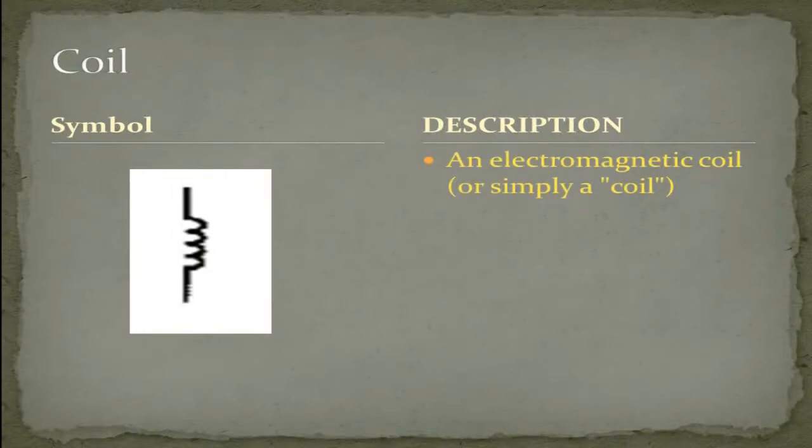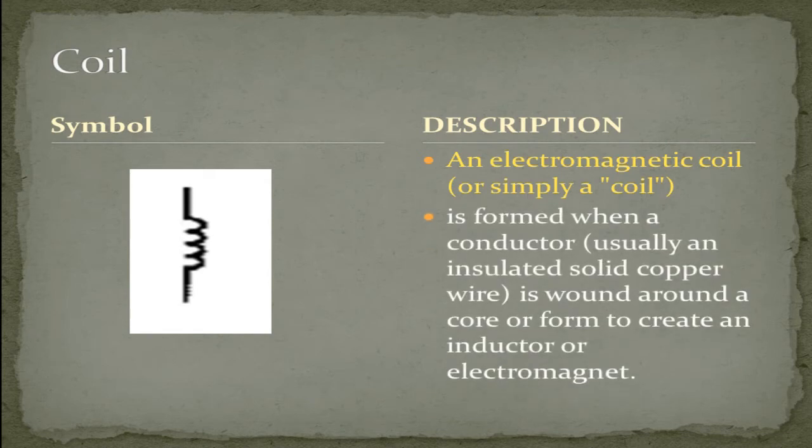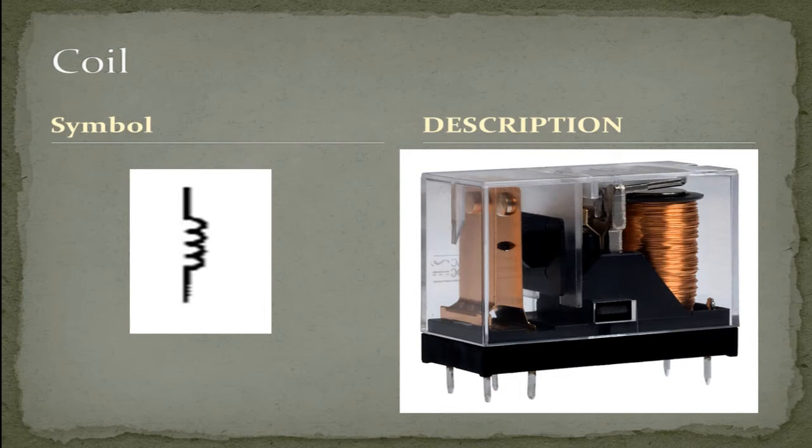An electromagnetic coil, or simply a coil, is formed when a conductor, usually an insulated solid copper wire, is wound around a core or form to create an inductor or electromagnet. As illustrated here in this relay, you can see the copper wire wrapped around its core, which creates an electromagnet and in return operates the relay.